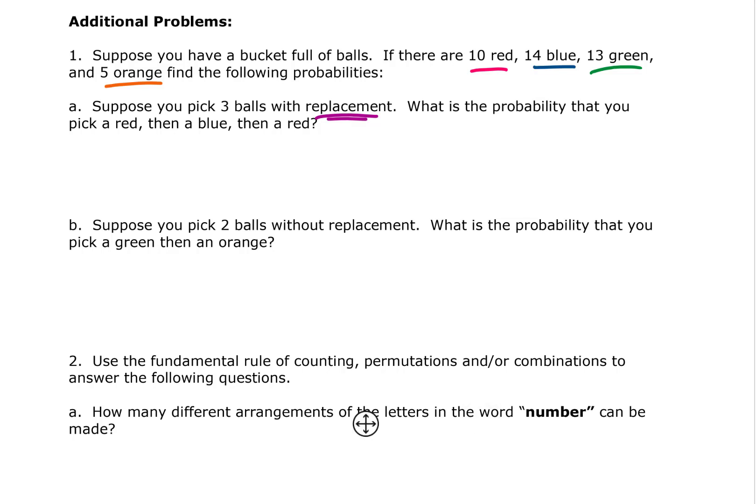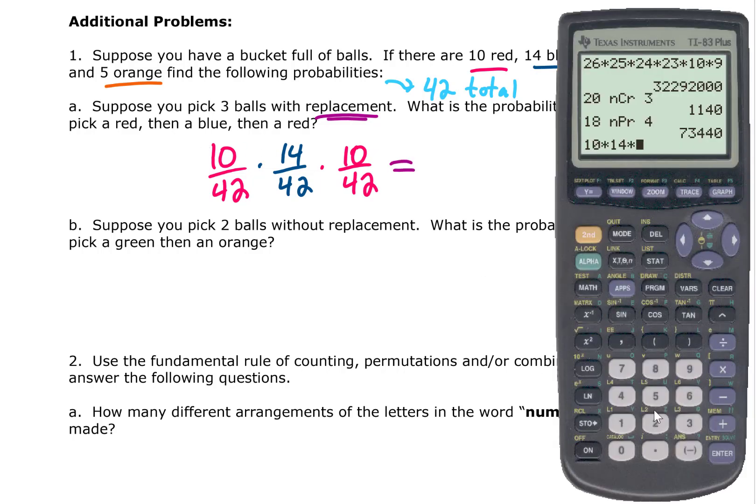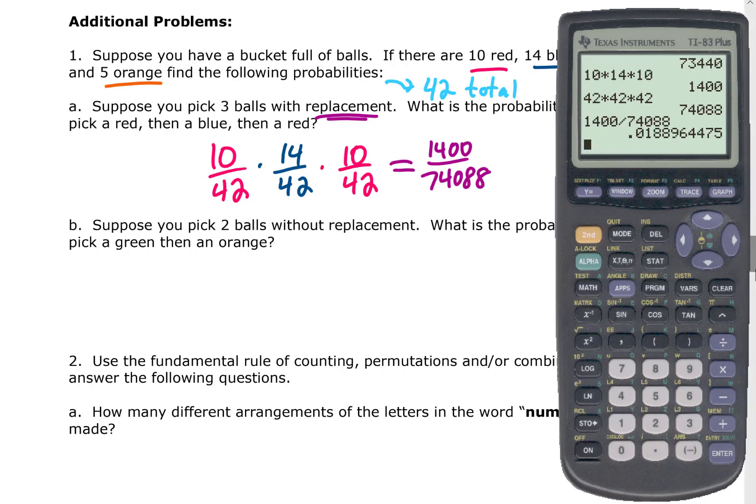So the question is what is the probability that we first choose a red ball? Well there were 10 red balls in the bucket and 42 balls total. So the probability of first choosing a red ball is 10 out of 42. The probability of then choosing a blue ball is 14 out of 42. Again we put that ball back in the bucket, and the probability of finding a red ball again is 10 out of 42. To get the answer, we multiply 10 times 14 times 10, which gives us 1400 on top, and 42 times 42 times 42, which is 74,088. That gives us a decimal of 0.019.